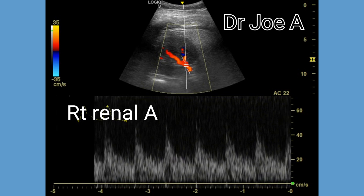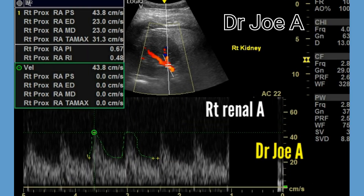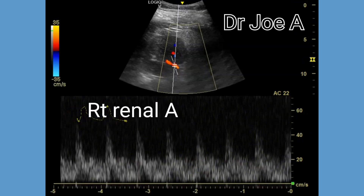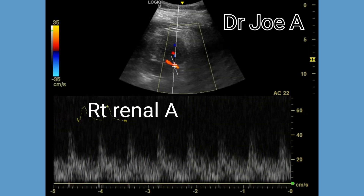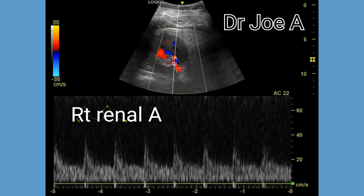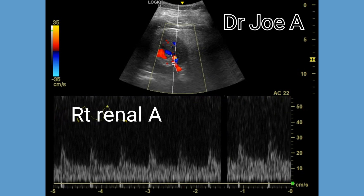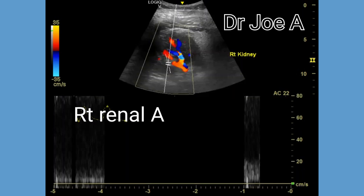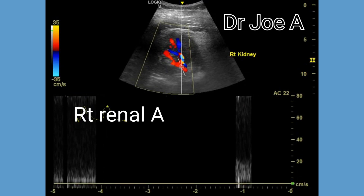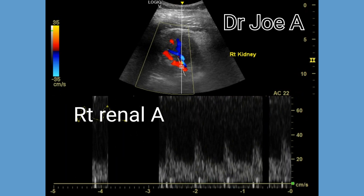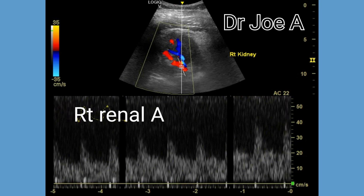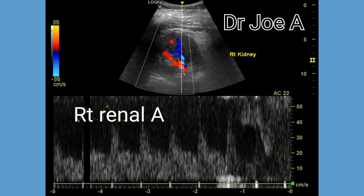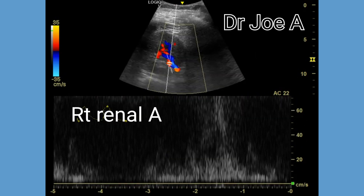Next we go to a spectral Doppler of the renal arteries. The normal spectral Doppler waveform of the renal artery has a systolic peak followed by almost continuous diastolic flow. The diastolic flow is due to the elastic recoil of the vessel wall, while the systolic flow is due to cardiac contraction. The peak systolic velocity in the renal artery is typically less than 180 centimeters per second.